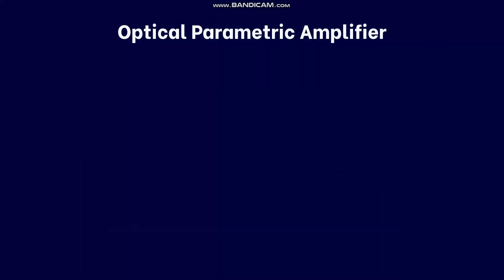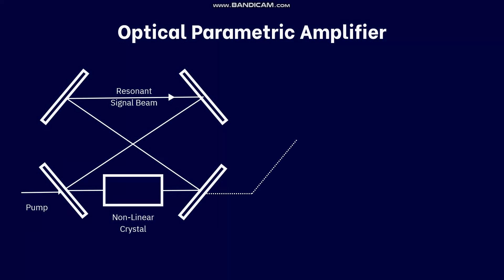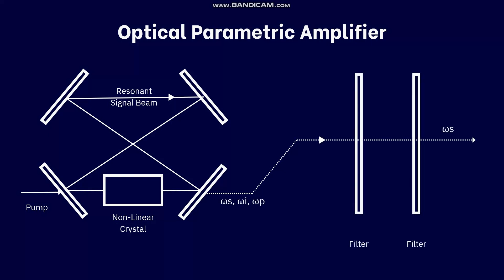In the Optical Parametric Amplifier, an optical cavity is added to the Optical Parametric Oscillator and light is oscillated using mirrors in the optical cavity. This increases the density of omega_s and omega_i in the system. The signal output consists of omega_s, omega_i, and omega_p, which are then passed through a filter to obtain the desired signal.